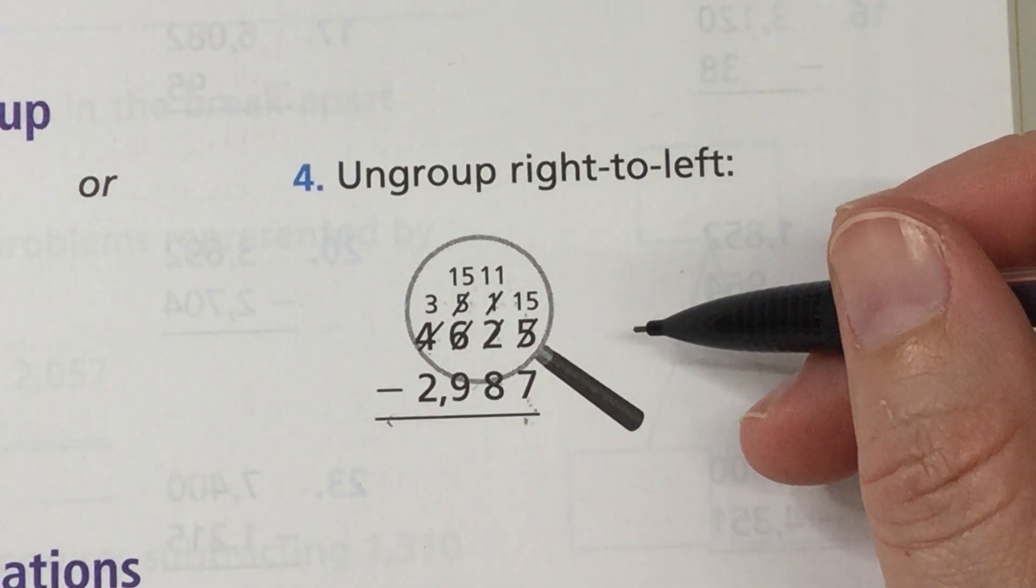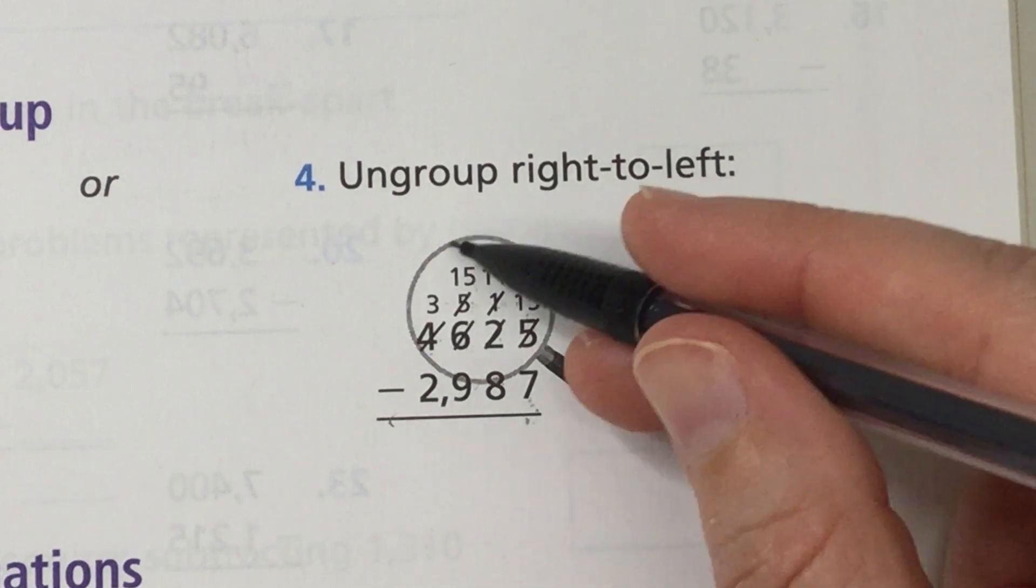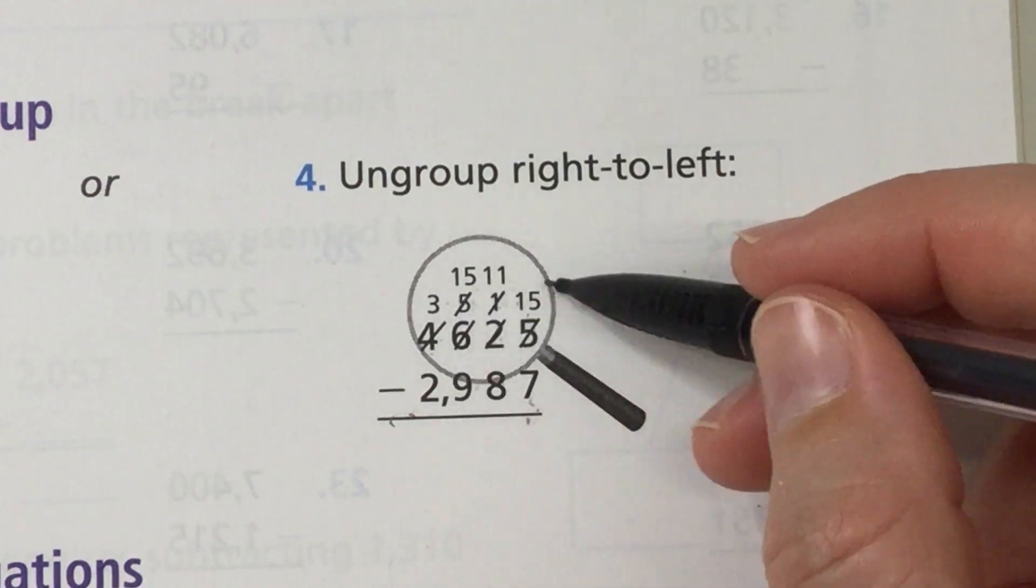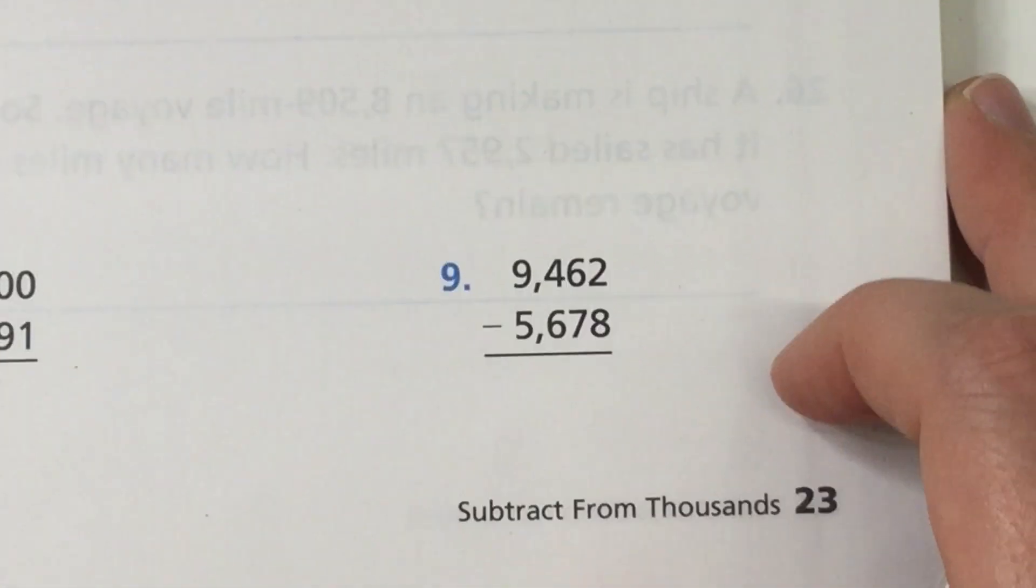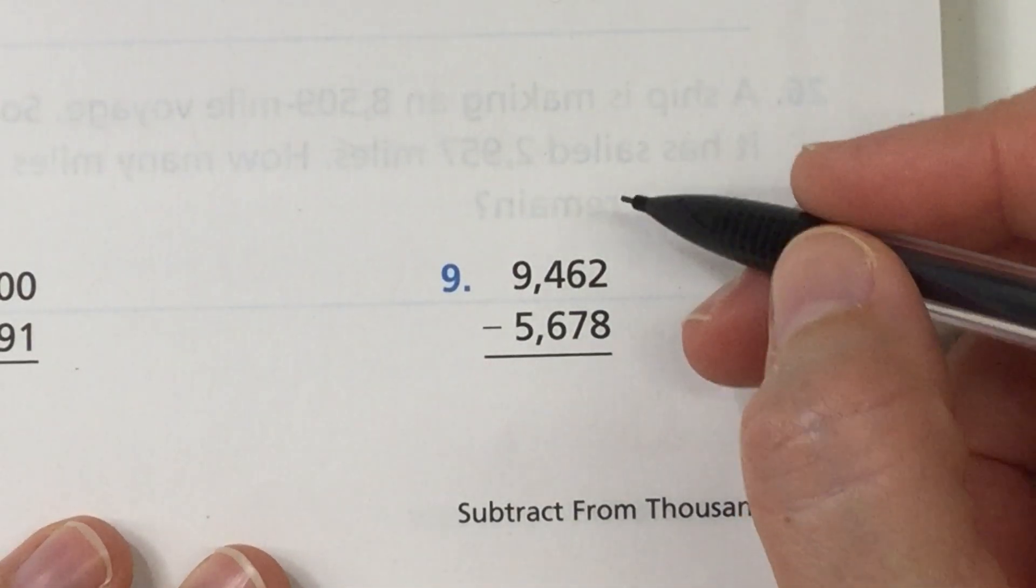So as you're going through some of these practice problems today really be careful. Make sure that you're ungrouping from right to left and that you're showing all of your steps. Okay? I'm gonna do number 9 together. Please follow along in your book and do it with me.